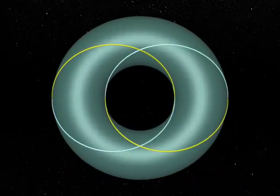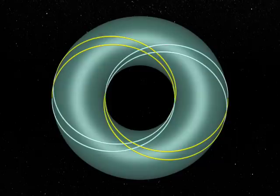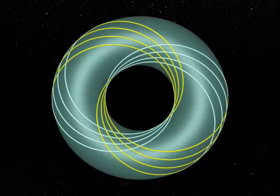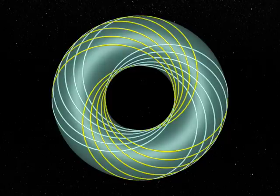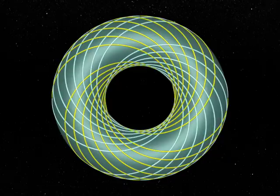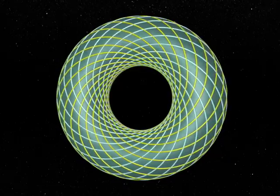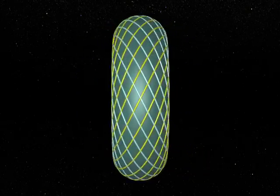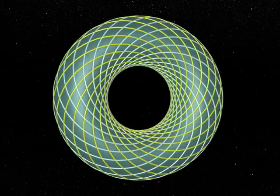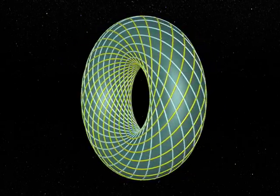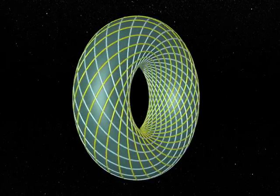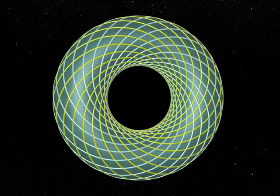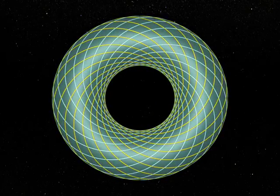And one can do the same for all other bi-tangent planes — we just need to rotate around the axis of symmetry. Through each point on the torus of revolution, one can draw four circles, obtained by suitable slices.